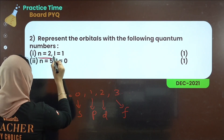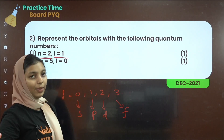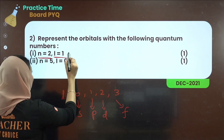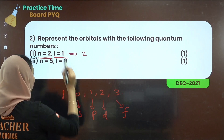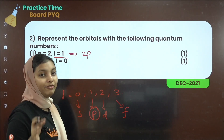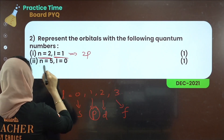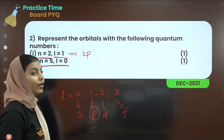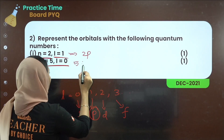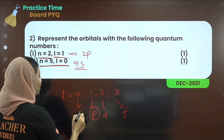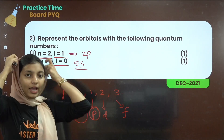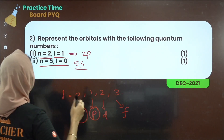For n equal to 2, l equal to 1: n=2 gives the shell number 2, and l=1 corresponds to p orbital. So the answer is 2p. For the second case, n equal to 5, l equal to 0: l=0 is s orbital, so the answer is 5s. Clear?